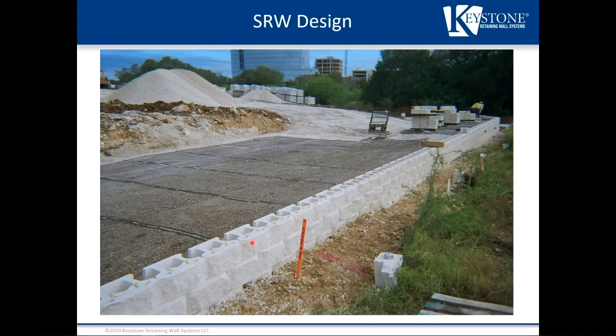Our reinforcement lengths are continuous — 100% from the front face of the wall to the end of reinforcement. With polyester geogrids, there is no way to splice them together, and grid coverage must be 100%. Grids are set side by side down the length of the wall, not overlapped, so we have 100% coverage of reinforcement.